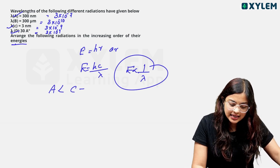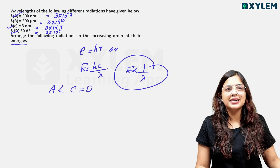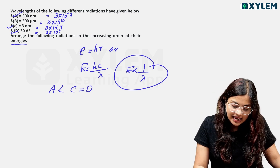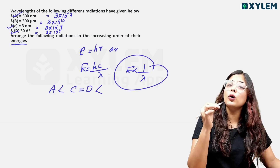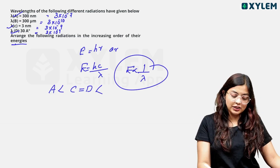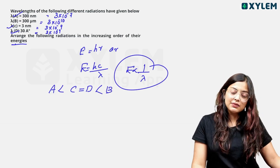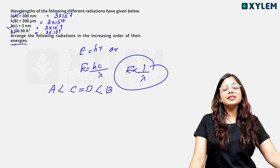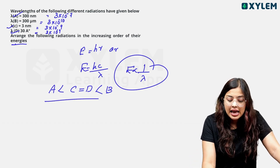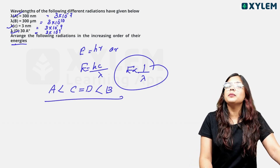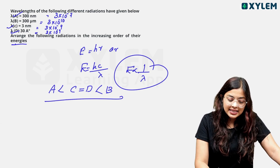Comparing the wavelengths: C equals D — two of them have the same energy. So we arrange in increasing order of energy based on decreasing wavelength order.